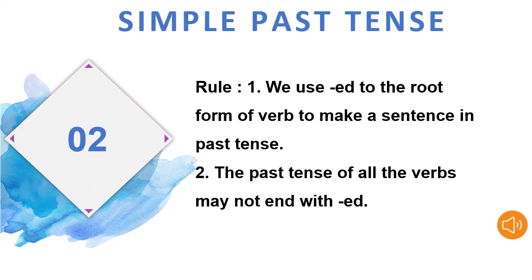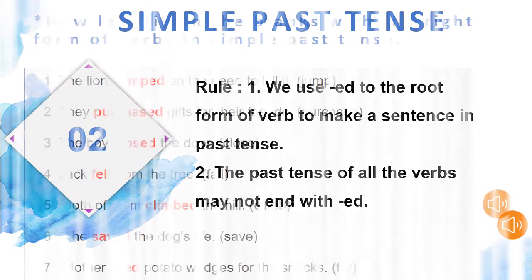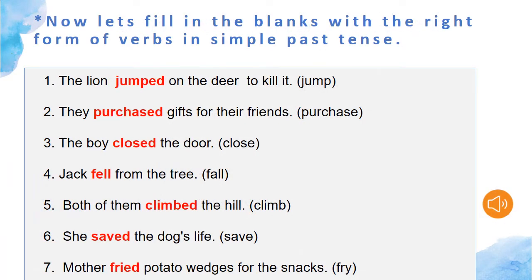Coming to the second topic, it's simple past tense. Let's go through the rules. We use ed added to the root form of the verb to make a sentence in past tense. The next rule is very important: the past tense of all verbs may not end with ed. Now that we have seen the rules of simple past tense, let's fill in the blanks with the right form of verbs in simple past tense.